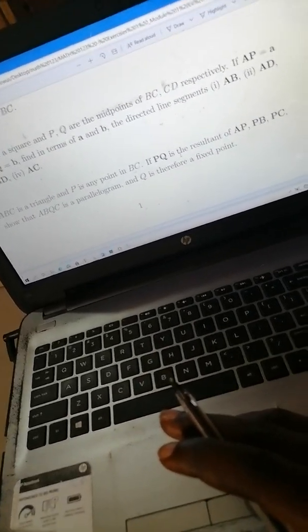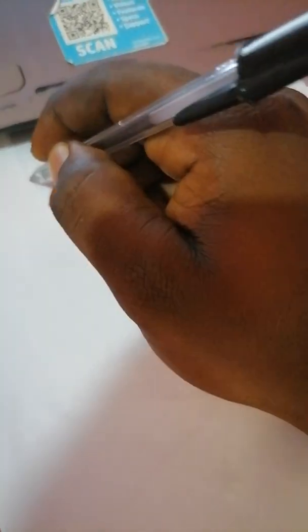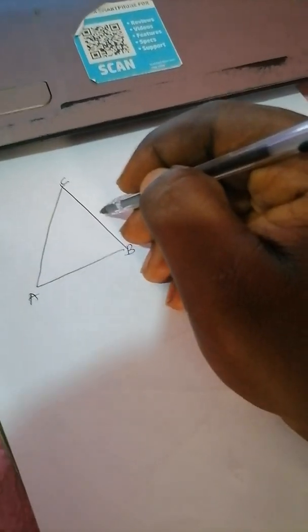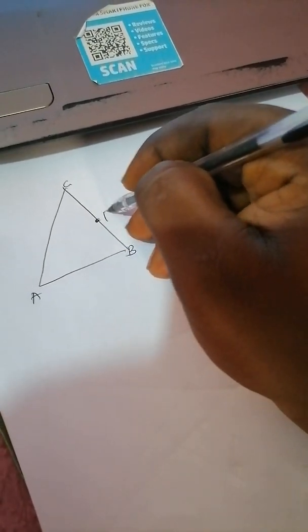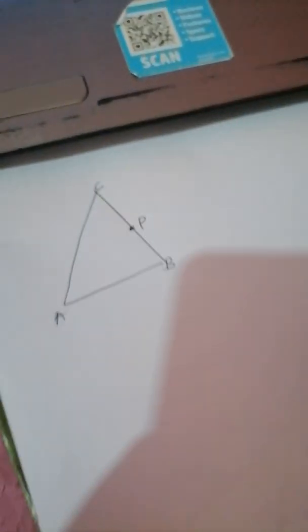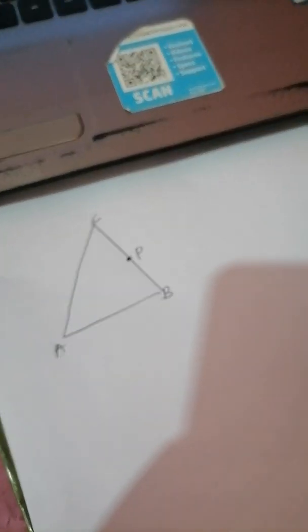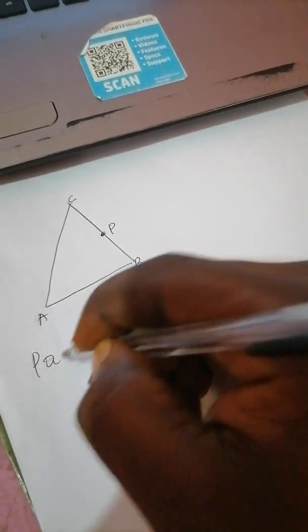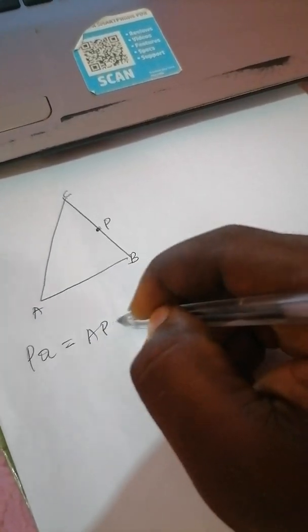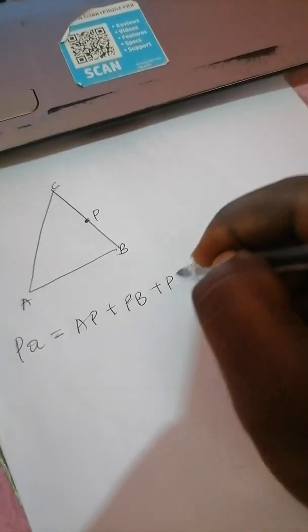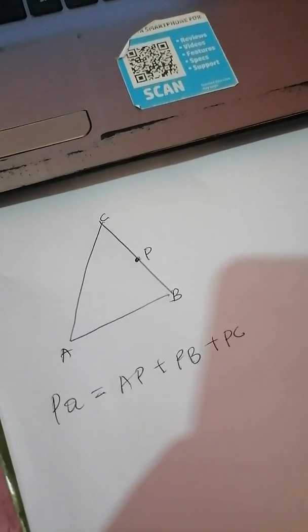Let's dive right into it. So let's draw our triangle. We have A, B, C. Then P is a point, so we just draw P showing P on BC. Now what do we have? We know that PQ is AP plus PB plus PC. Now we have to figure out where Q lies.